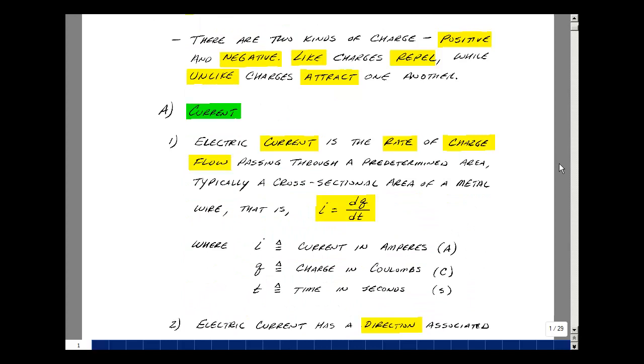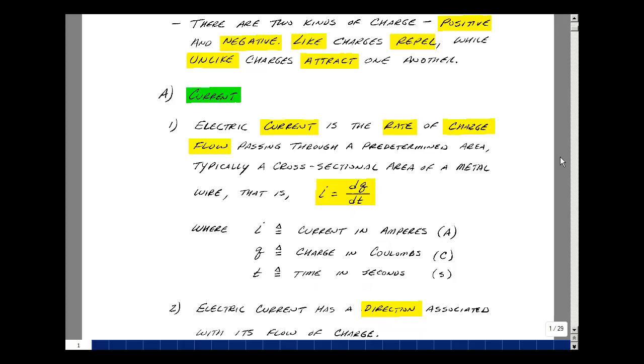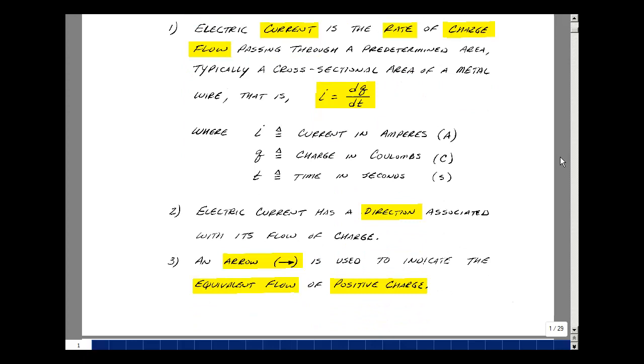Let's define electric current. Electric current is the rate of charge flow passing through a predetermined area, typically a cross-sectional area of a piece of wire. It's defined as the change in charge per change in time. If you take the change small enough, that becomes a derivative. So I is equal to dq/dt, where I is current in amperes, charge is in coulombs, and time is in seconds. Electric current has a direction associated with its flow of charge, just like water in a pipe or hose. An arrow is used to indicate the equivalent flow of positive charge.